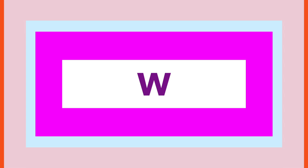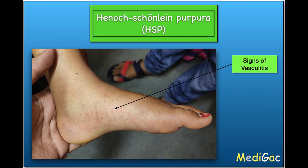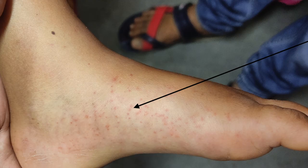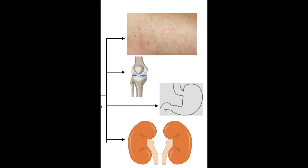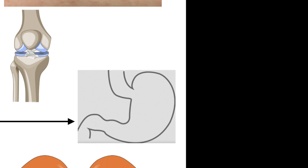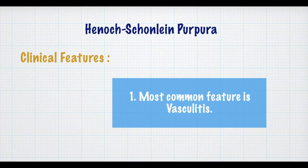Hello everyone, welcome to MediGak. Today we are going to discuss about Henoch-Schönlein purpura or HSP. This occurs when vasculitis occurs in childhood. This disease is characterized by deposition of IgA antibody in the small blood vessels of skin, joint, kidney, and gastrointestinal tract.